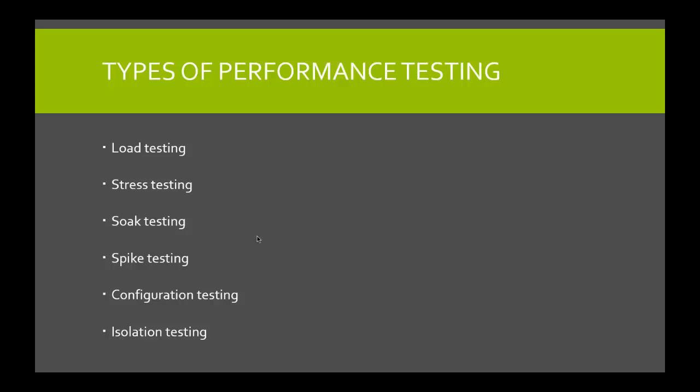Spike testing is done by suddenly increasing the number of load generated by users by a very large amount and observing the behavior of the system. A good example of why you'd do this is to guard against things like SQL injection or general hacking scenarios — stress testing and spike testing work hand in hand for this. The goal of spike testing is to determine whether performance will suffer, the system will fail, or whether it can handle dramatic changes to the load.